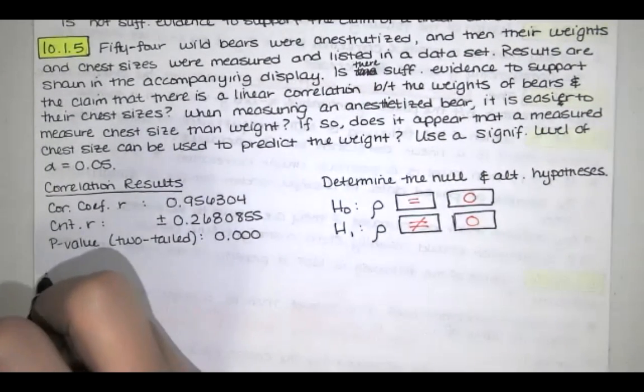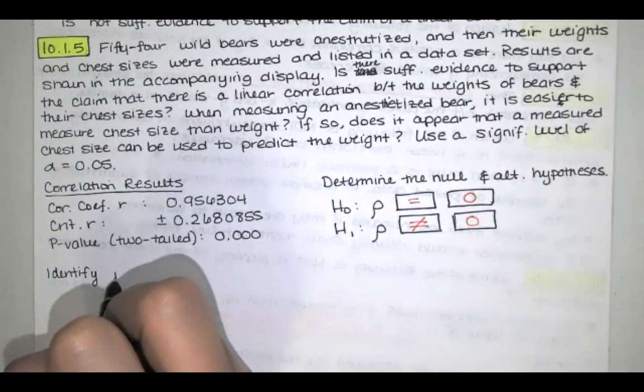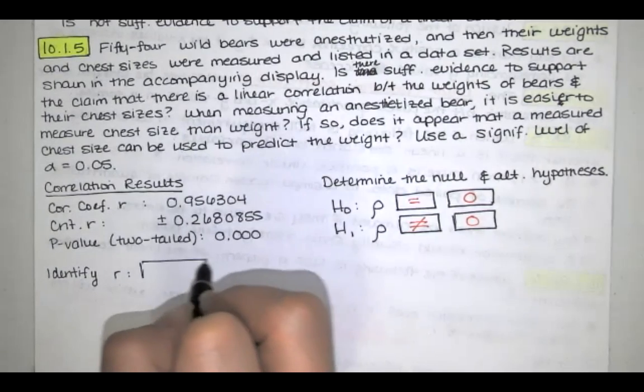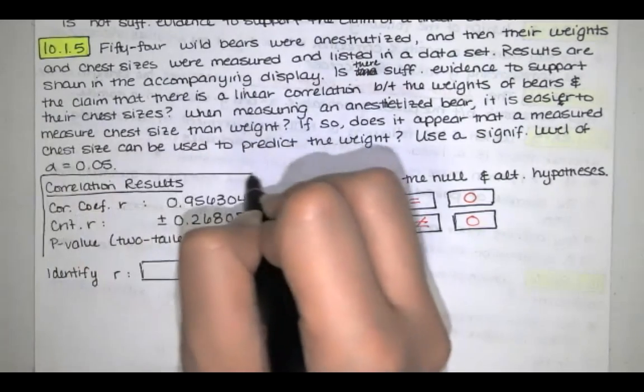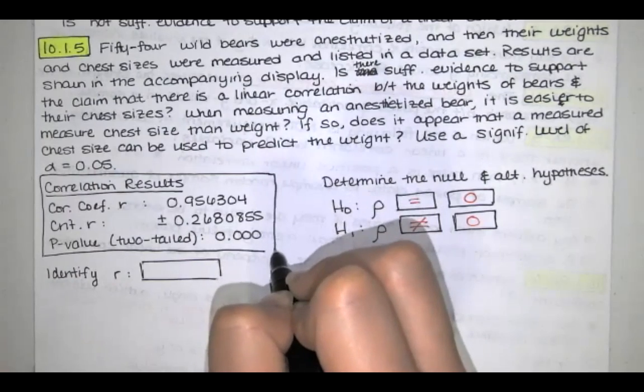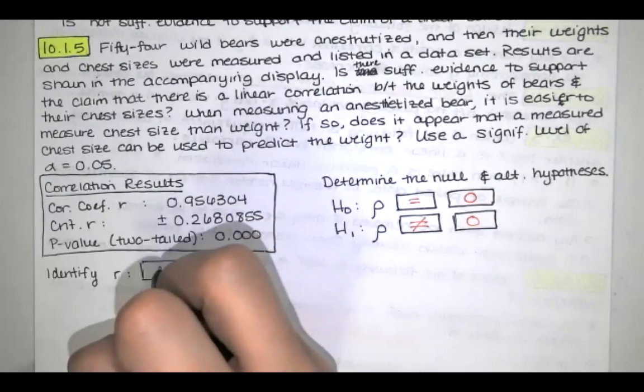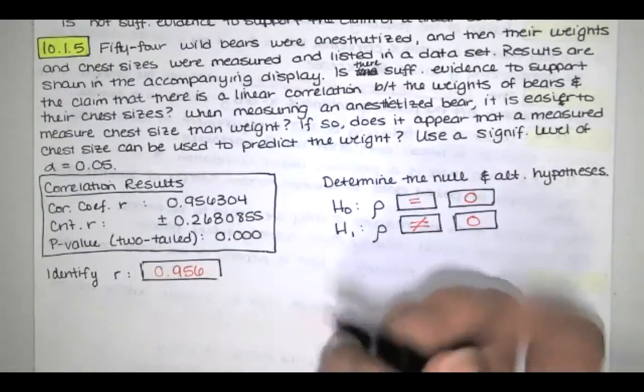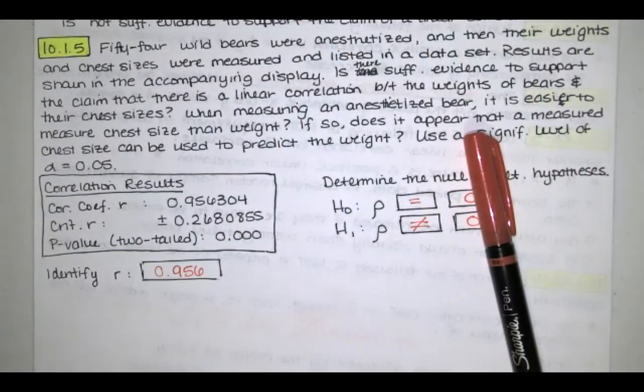The next thing that we're asked to do is identify the correlation coefficient r, and we're asked to round to three decimal places. So if this is the output on your calculator, or on StatCrunch, or on some software that you're using, they're really just asking us to read this table and then round to three decimal places. So our correlation coefficient is 0.956. I know this is a really easy question, but I want to make sure that you know how to interpret the results in that box.